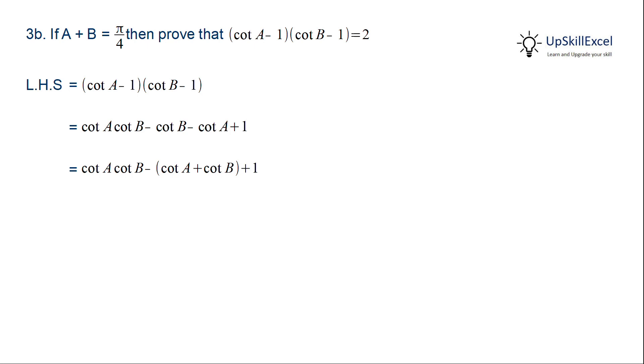Now we know that cot(A + B) is equal to (cot A cot B - 1) divided by (cot B + cot A). Here the highlighted terms, the second and third term is same as the denominator in cot(A + B).